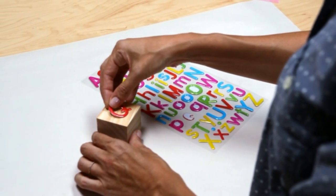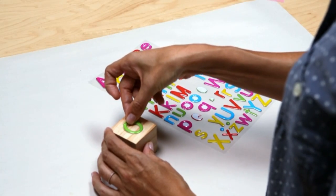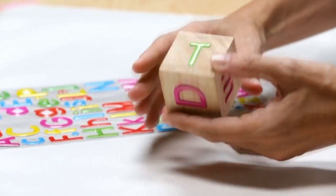Start by putting a sticker on each side of your block. You can use letters, numbers, or picture stickers but I'm just using letters.